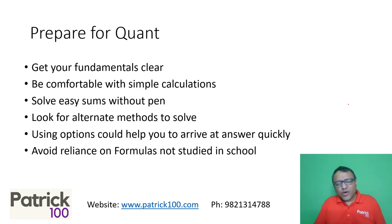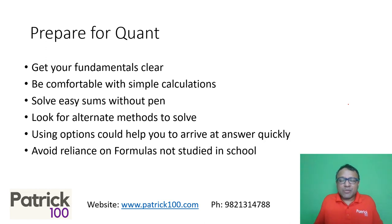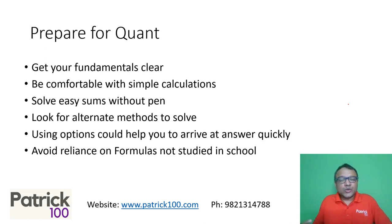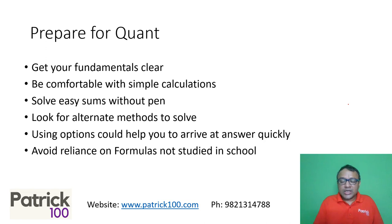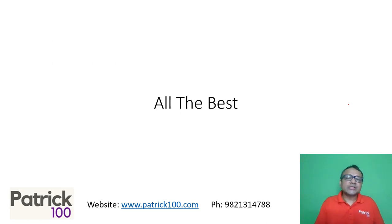Avoid reliance on formulas — it's not like studying in school. First of all, it clutters your mind with formulas, and when you tend to use formulas you become slower because they're not much useful in the exam. Using options can normally help you get the answer quickly — trying to solve the whole question normally takes longer, but using the options can definitely help you get things faster. So try to solve logically as far as possible. All the best for CAC 22.